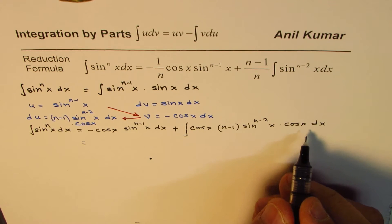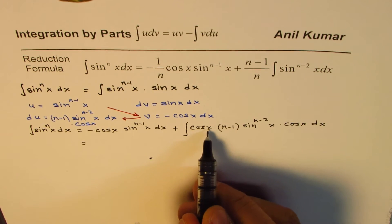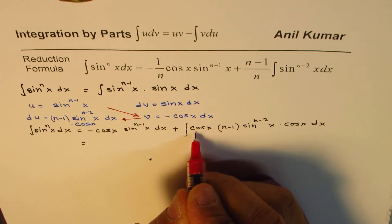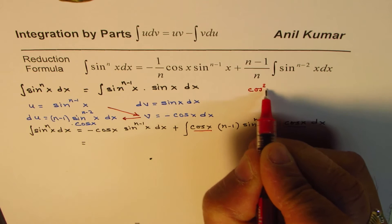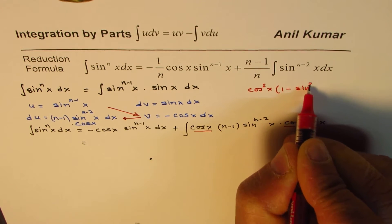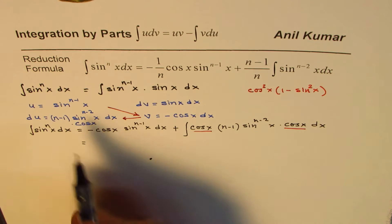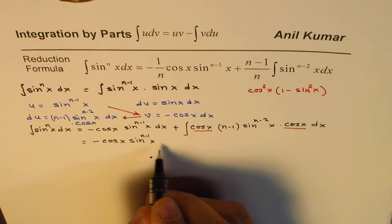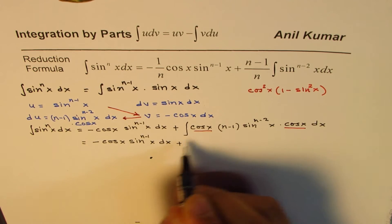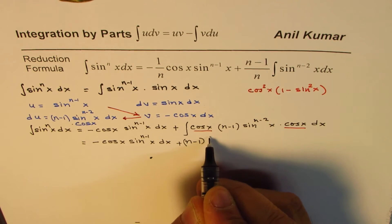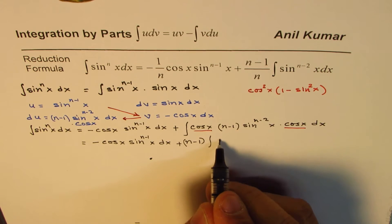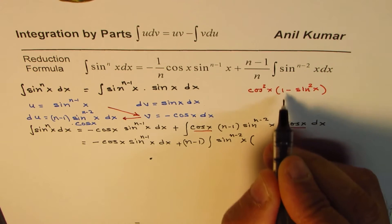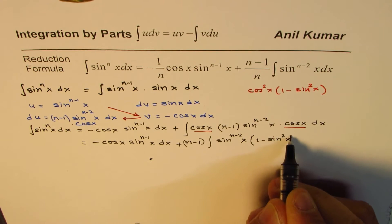Now, what do we observe here? We have cos squared x — do you see we have cos squared x? So I could replace cos squared x by 1 minus sine squared x. So we can write this as minus cos x times sine to the power of n minus 1 of x, plus n minus 1 times the integral of sine to the power of n minus 2 of x times the quantity 1 minus sine squared x dx.